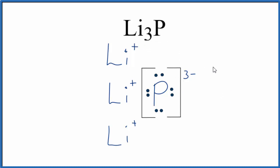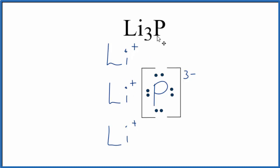Do note that this is what we call a formula unit. If you had solid Li3P, that would be a crystal, and it would be made up of these formula units in a repeating pattern. But this is useful to show us how the electrons are transferred from the lithium to the phosphorus in the Li3P Lewis structure. This is Dr. B, and thanks for watching.